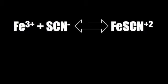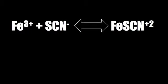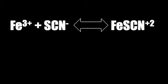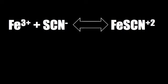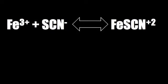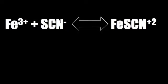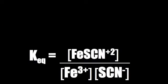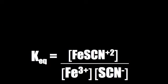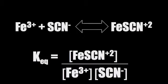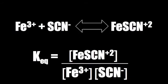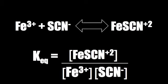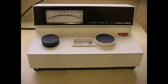In the experiment we are using today, we are using Fe³⁺ plus SCN⁻ yields FeSCN²⁺. Therefore, the equilibrium constant is equal to FeSCN²⁺ over Fe³⁺ times SCN⁻.